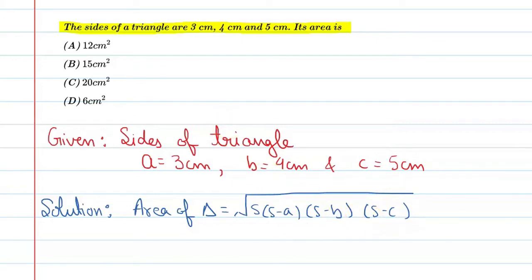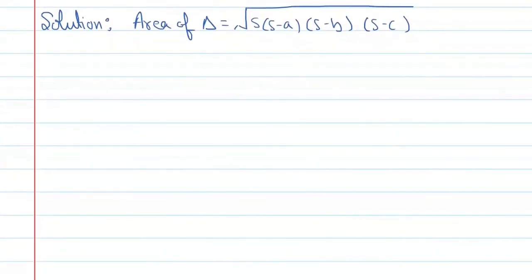So what is S value here? S is called semi-perimeter. How will we find semi-perimeter? S is equal to A plus B plus C upon 2. The value is 3 plus 4 plus 5 upon 2, which is equal to 12 upon 2.